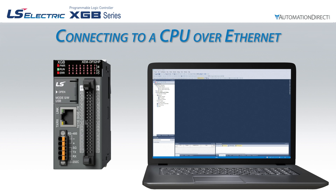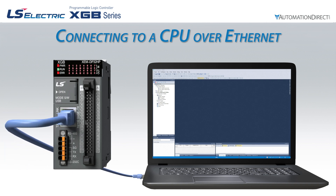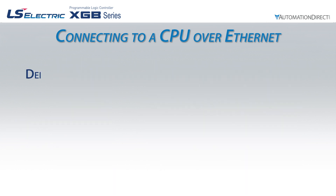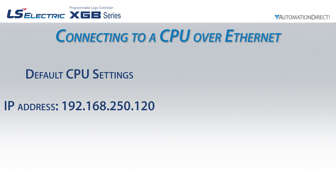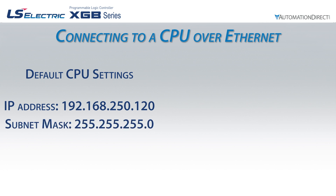Due to the configurable nature of Ethernet networks and the various potential failure points, we strongly recommend using an Ethernet cable directly between the CPU and the programming computer for the initial configuration and connection. The default IP address of the XEM CPU is 192.168.250.120, and the default subnet mask is 255.255.255.0.